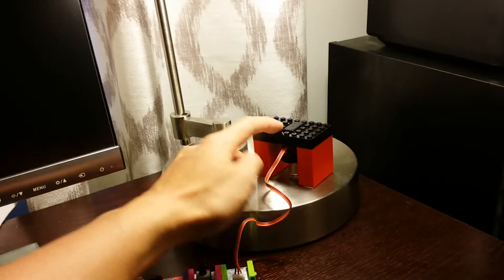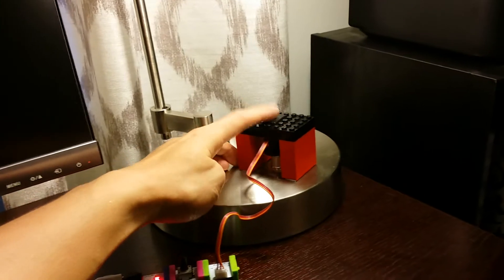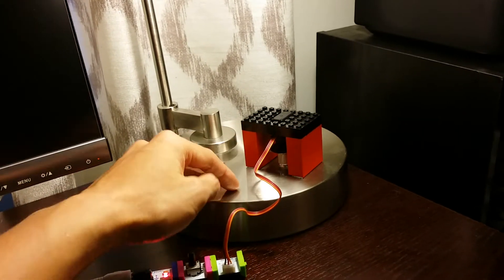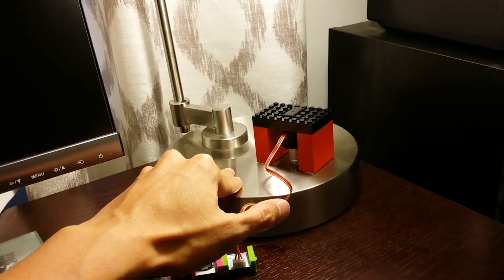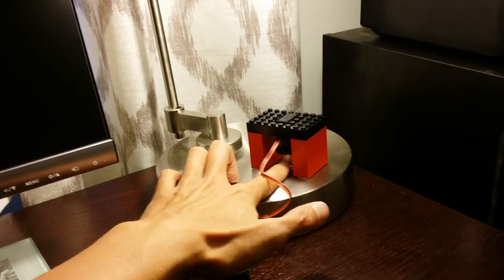You need this part to keep the non-moving part of the servo motor stationary so that the moving part can move the knob.